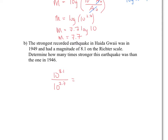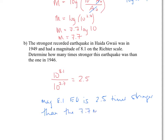If you plug that into your calculator, you get approximately 2.5. So this means that the magnitude 8.1 earthquake is 2.5 times stronger than the 7.7 magnitude earthquake. We simply divided 10 to the power of 8.1 by 10 to the power of 7.7.